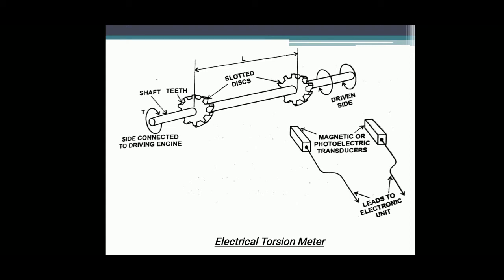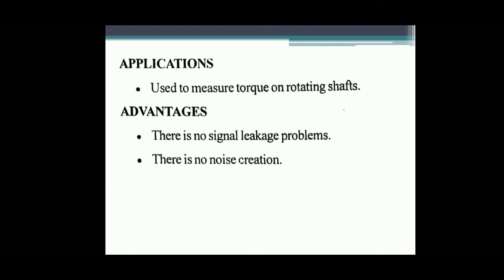This is how the electrical torsion meter works. Applications: it is used to measure torque on rotating shafts. Advantages: there is no signal leakage problem and no noise creation in this electrical torsion meter.